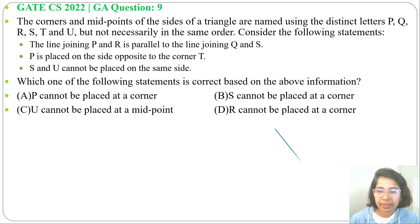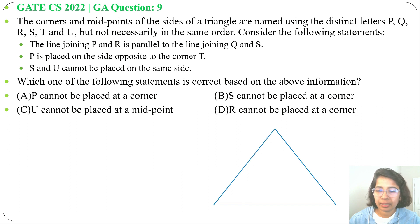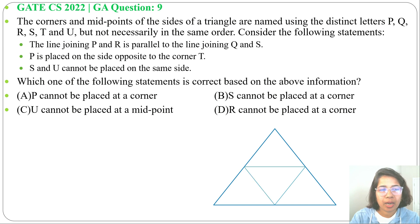So, a triangle is given. There are three corners and three midpoints. P, Q, R, S, T, and U are the names of these corners and midpoints.